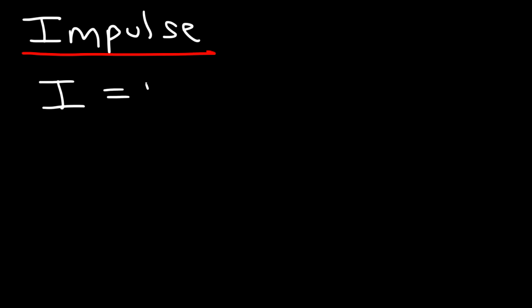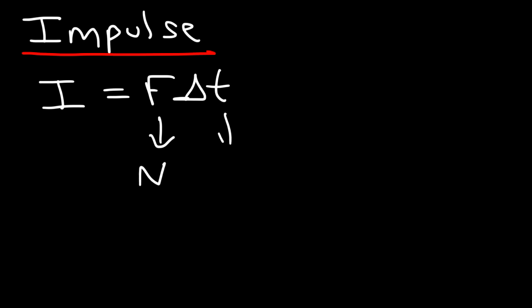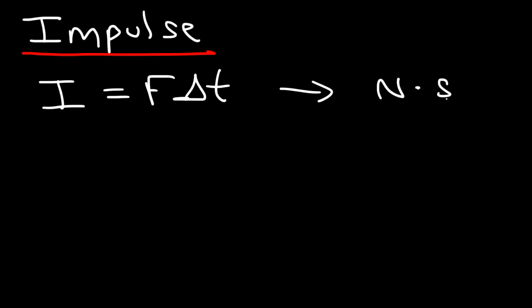Now let's talk about impulse. In physics, impulse is force multiplied by time. Note that I is sometimes used for inertia, but here I'm using I as impulse. So impulse equals force multiplied by time. The unit for force is the newton and for time it's seconds, so impulse has the units newtons times seconds.